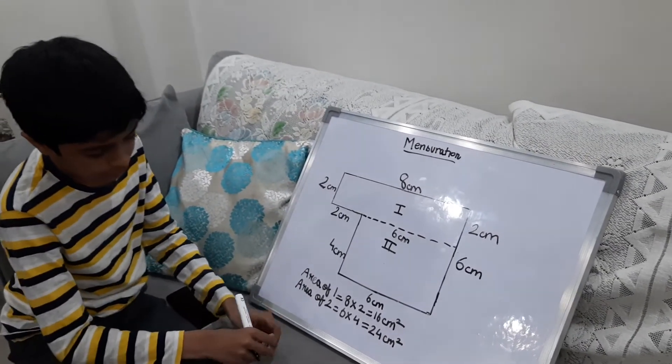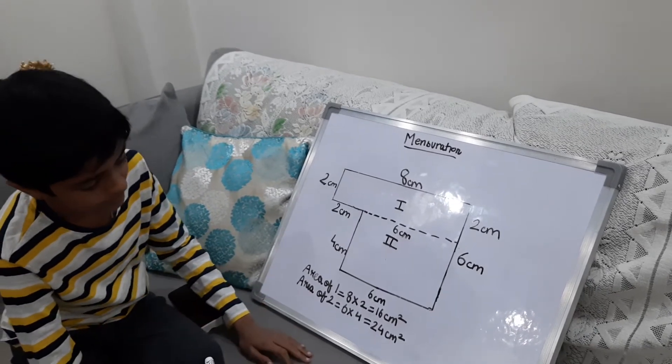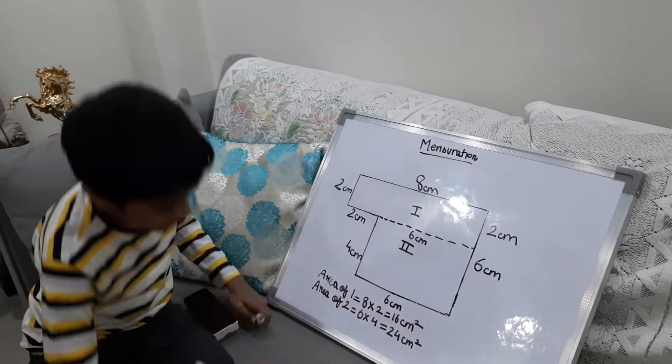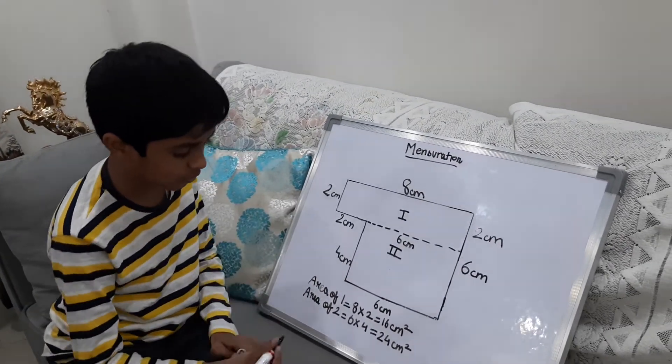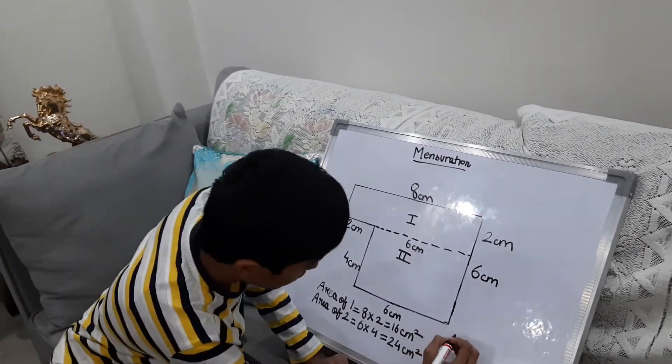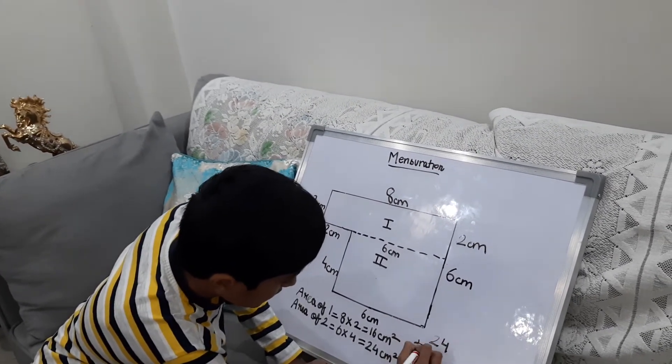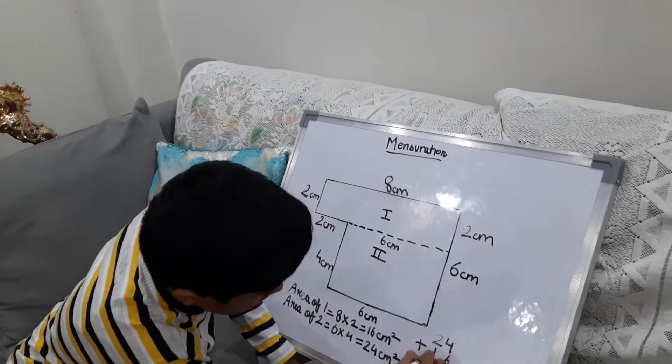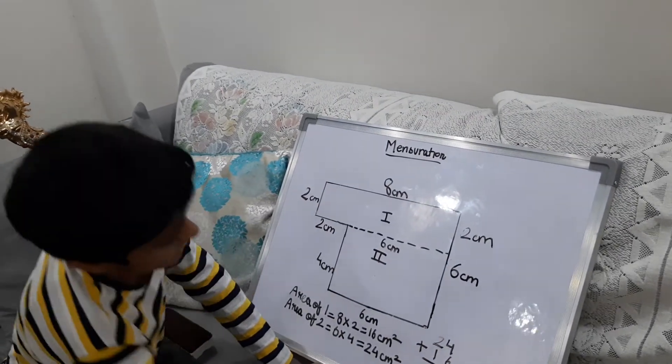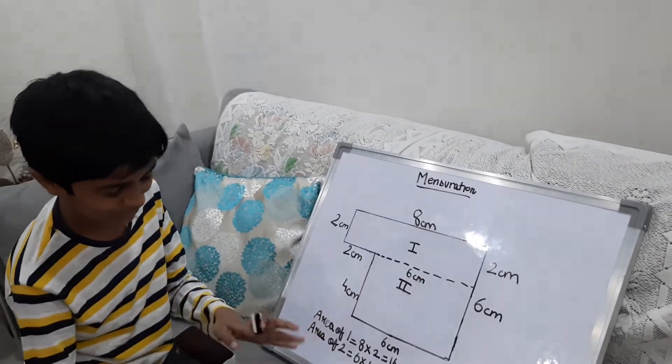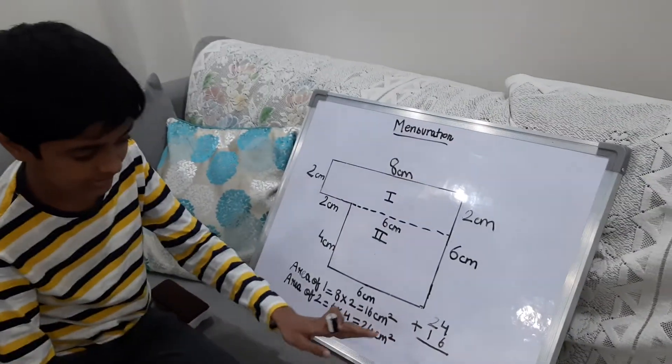Now we will have to find the total of these 2 numbers. So 24 plus 16. 16 times 4 is 10. Sorry, 16 plus 4 is 10.